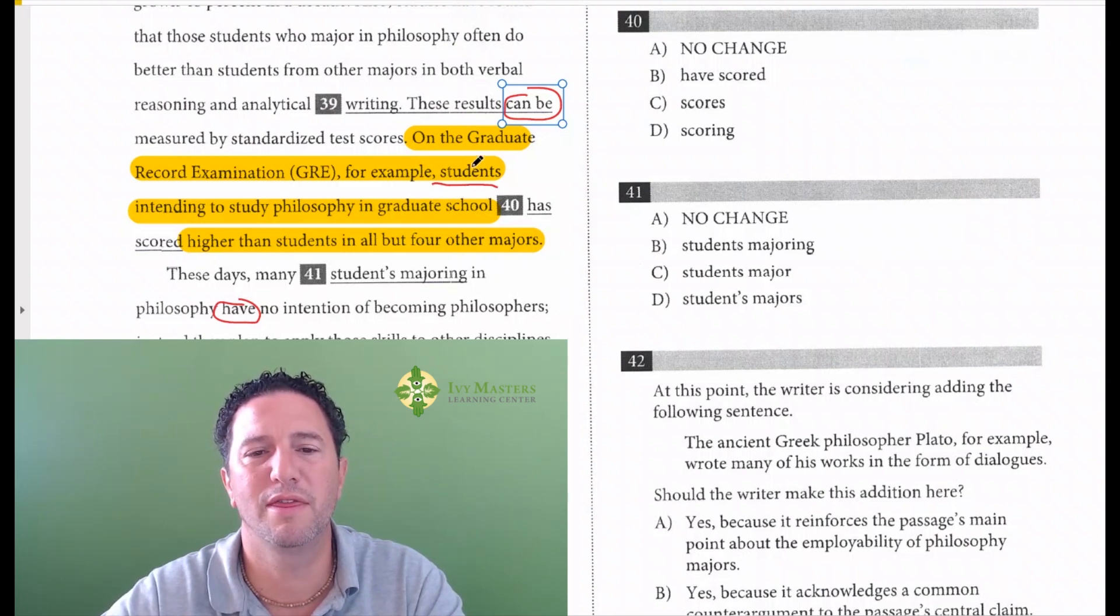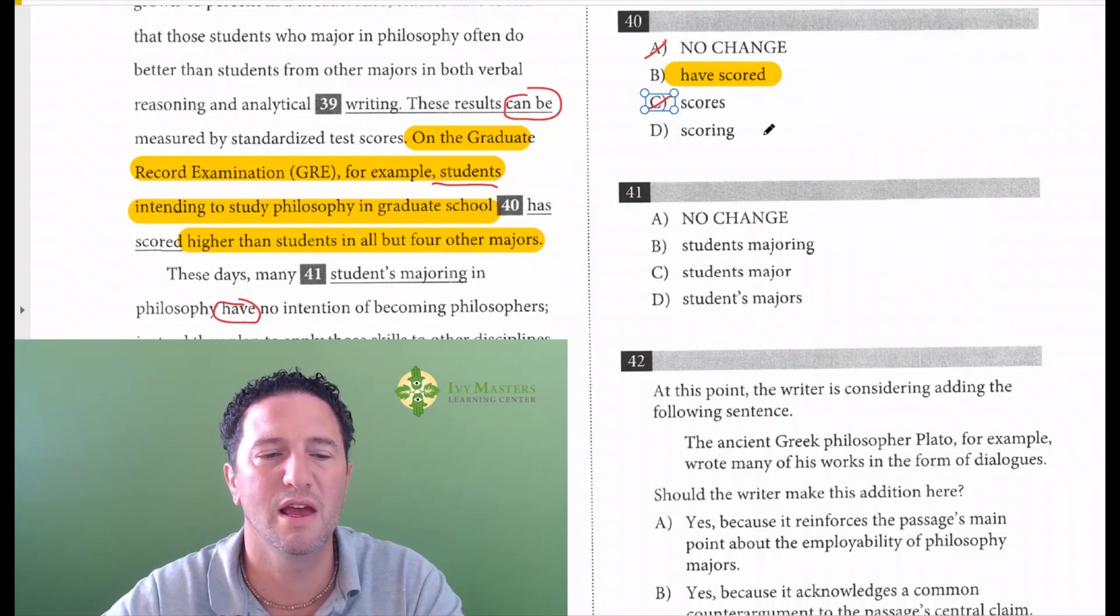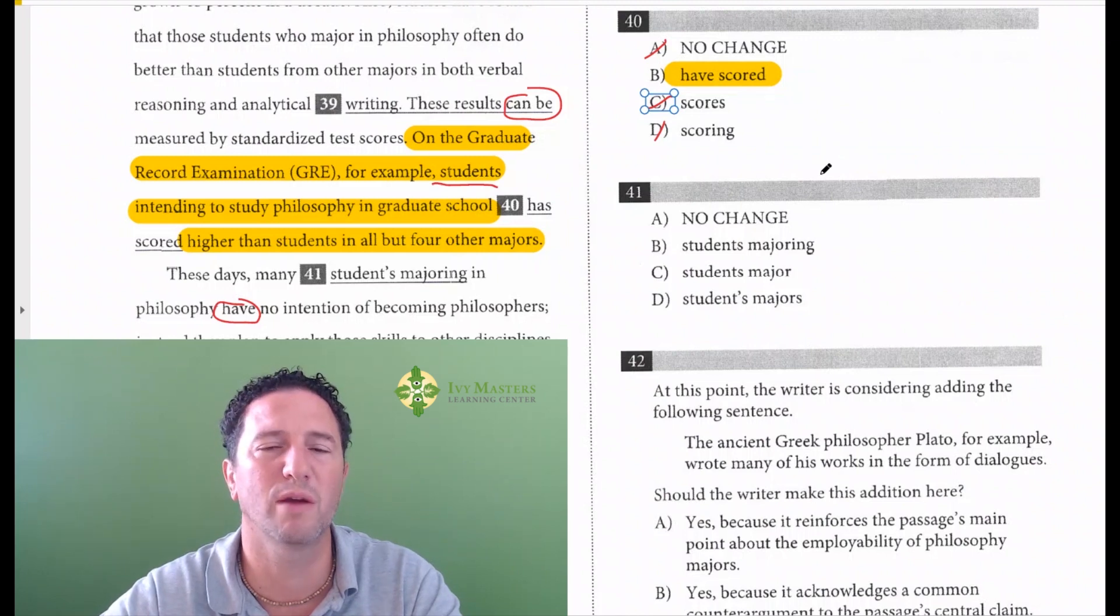So they has scored does not make sense - A is gone. They have scored makes perfect sense. They scores does not make sense. And they scoring higher than students on all but four other majors actually turns it into a sentence fragment. Watch out for those -ing verbs. The correct answer here is B.